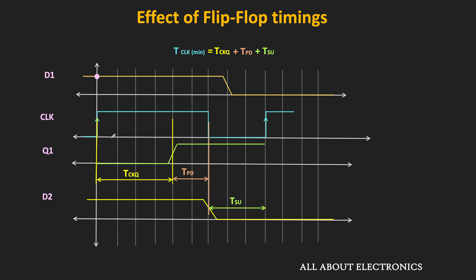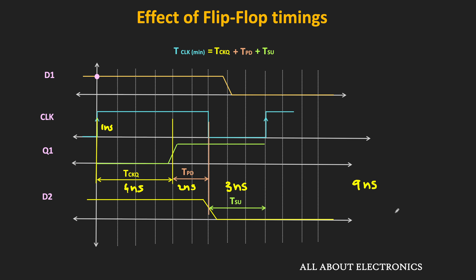So as you can see, the setup time and propagation delay decide the minimum required clock duration, or equivalently the maximum operating clock frequency of the sequential circuit. Here, if each time segment represents one nanosecond, then TCKQ equals 4 ns, the propagation delay of the combinational circuit is 2 ns, and the setup time is 3 ns. That means the minimum required clock duration is the summation of all these timings, equal to 9 ns. The maximum clock frequency is the inverse of that — roughly 111 MHz.